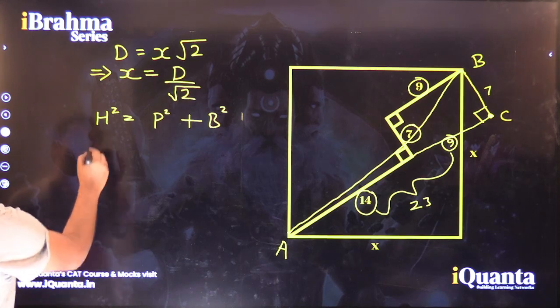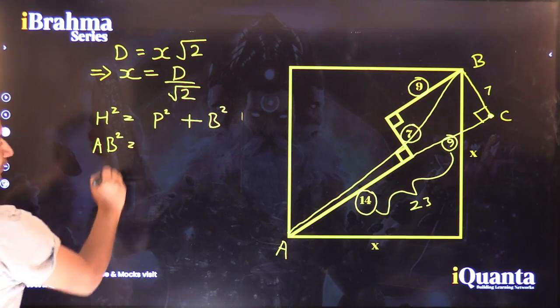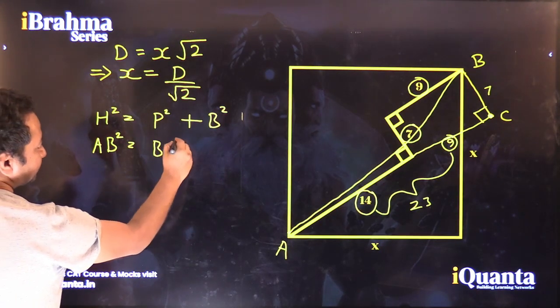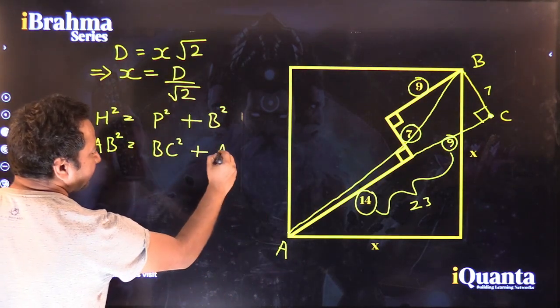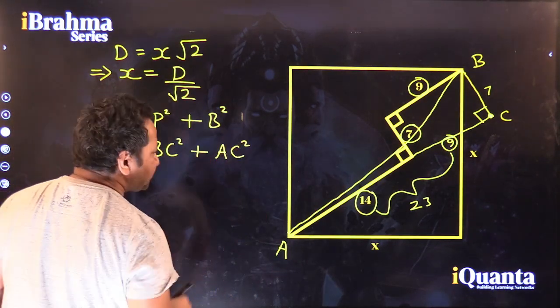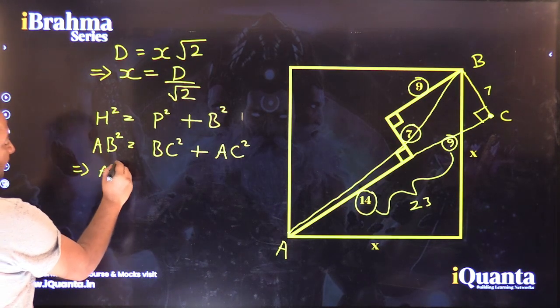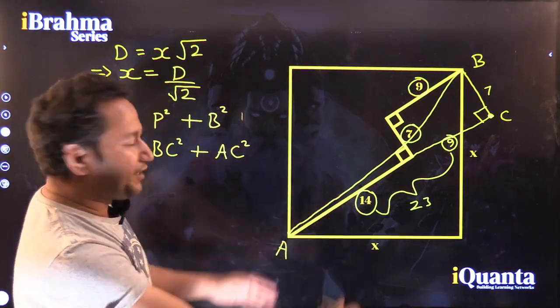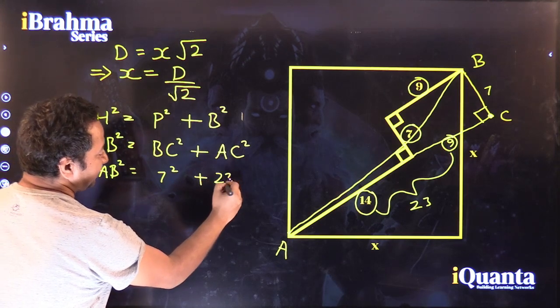the hypotenuse is AB, the perpendicular is BC and the base is AC. Just put in the values here. So I will get AB square is equal to 7 square plus 23 square.